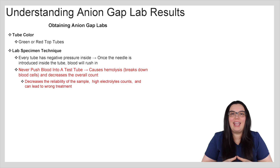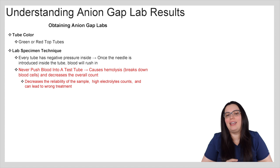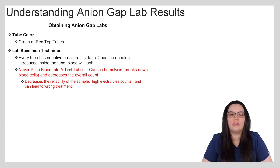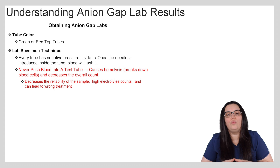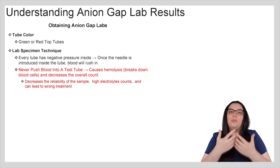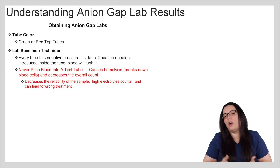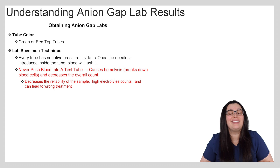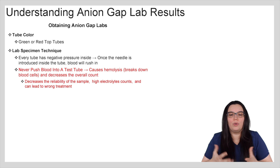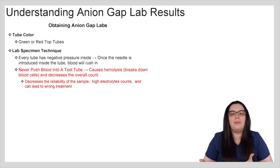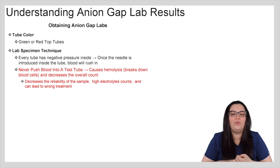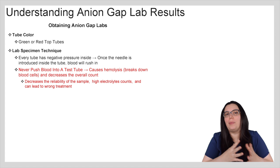When we're obtaining an anion gap for testing, we're going to send it in either a green or red top tube. Those are the two tubes we would use to collect this particular specimen. As you know, every single tube has negative pressure located inside, so once that needle is introduced into the tube, the blood should automatically rush in. You don't want to push blood into a test tube because it can cause hemolysis, which is a breakdown of the cells, thus skewing our overall counts. If we have decreased reliability of the sample, we're going to have high electrolyte counts, and that can ultimately lead to wrong treatment based on improper technique.